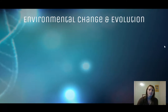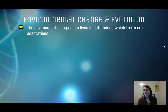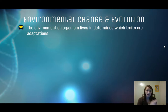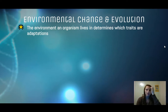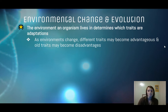Environmental changes can lead to evolution over time. The environment an organism lives in determines which traits are adaptations — traits that are advantageous in a salt marsh are not going to be advantageous in a tundra ecosystem. As environments change, different traits can become advantageous and old traits might become disadvantageous.